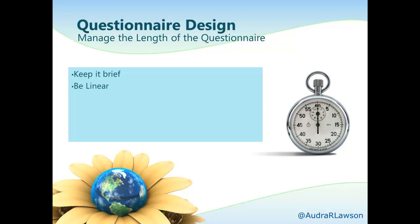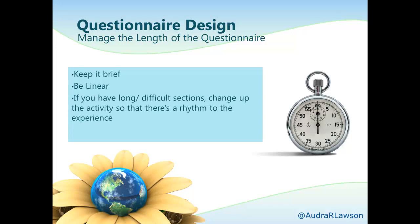Second, be linear. One mistake people make is hopping around from topic to topic in a way that doesn't make sense. The rule of thumb is to start with the broadest topics first and then narrow as you move deeper — for example, moving from a broad category of goods to brand to specifics of a brand. Third, if you have long or difficult sections, change up the activity periodically so there's a decent rhythm to the experience. Provide a breather activity that's easier and lighter to help transition into the next section.